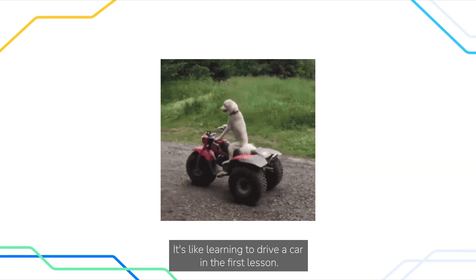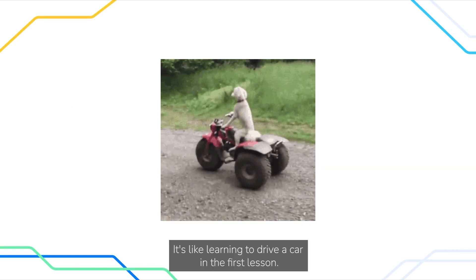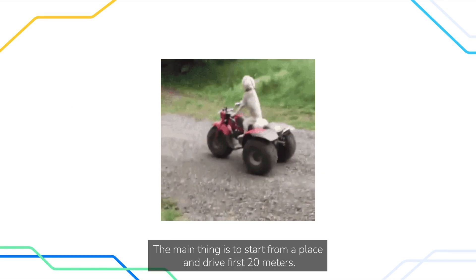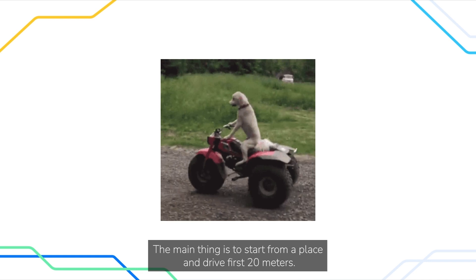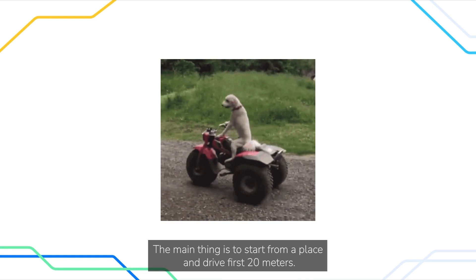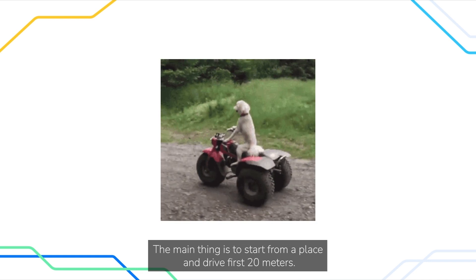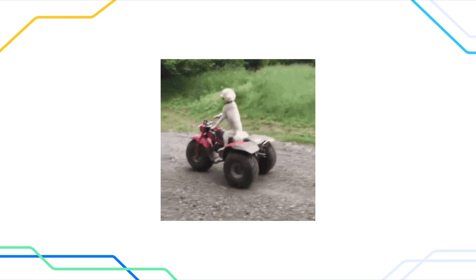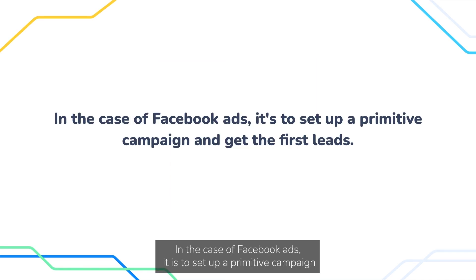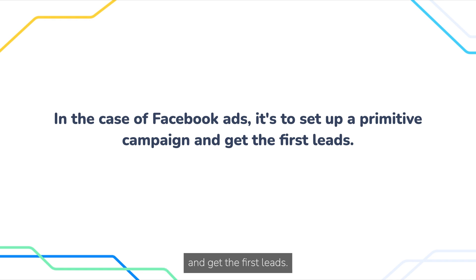It's like learning to drive a car. In the first lesson, the main thing is to start from a place and drive the first 20 meters. In the case of Facebook Ads, it is to set up a primitive campaign and get the first leads.